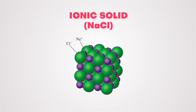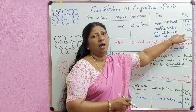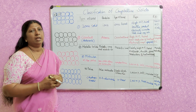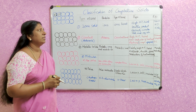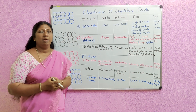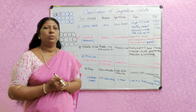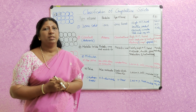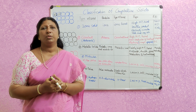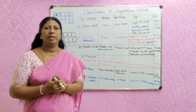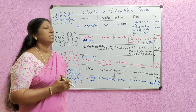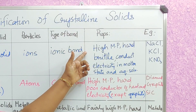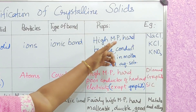NaCl, KCl, KNO3, etc. are examples of ionic solids. NaCl is very hard and has a very high melting point of 801 degrees Celsius. The melting point of potassium chloride is 770 degrees Celsius. So these ionic solids have high melting point and are hard.